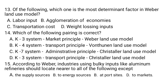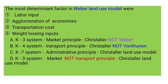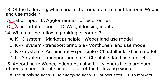Question number thirteen: Which is the most determinant factor in Weber's land use model? A) labor input, B) agglomeration of economy, C) transportation cost, D) weight-losing inputs. Labor input and agglomeration of economies are modifiable factors — if labor is excessive, the firm can reduce it. However, transportation cost is unmodifiable, making it the most determinant factor. The correct answer is C.